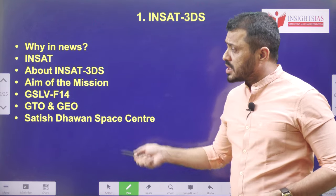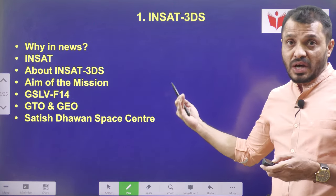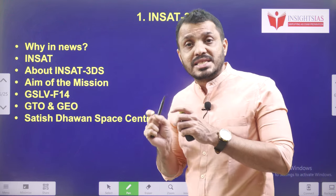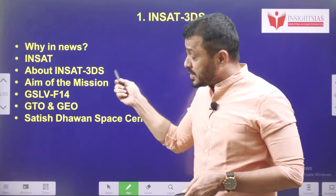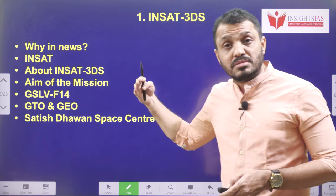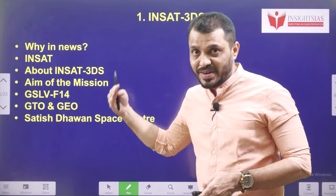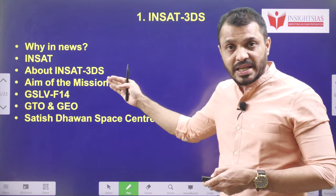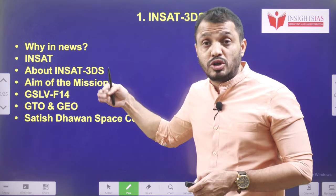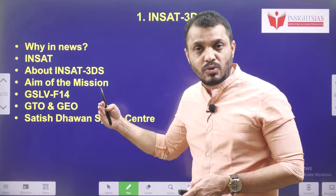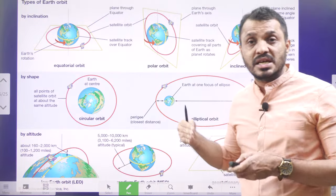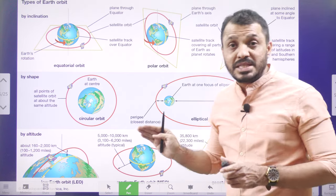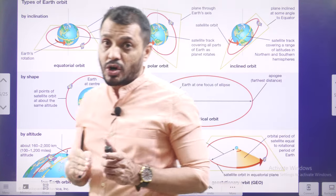We will discuss the main objective of this mission and what are the payloads. Apart from INSAT-3DS, there are some other payloads as well. We will also discuss which orbit it is going to be placed in — initially GTO, then GEO. We are going to discuss about various orbits related to space launch.